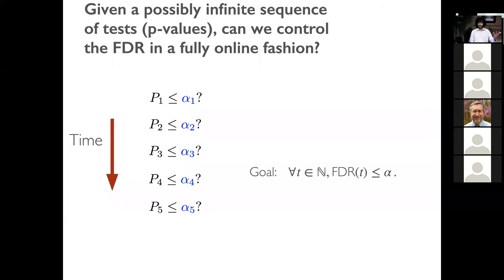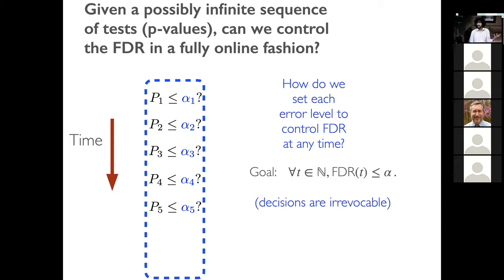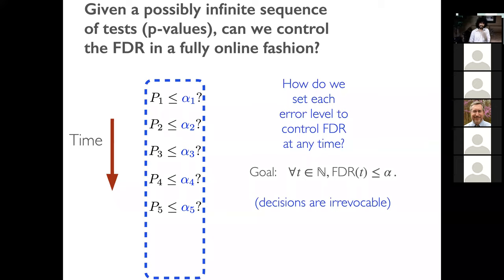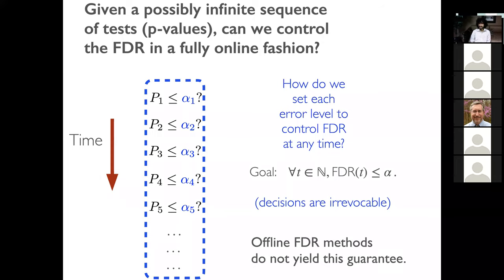Decisions are irrevocable. In January you find an interesting change or a drug that's much better than control, and in December you don't get to go back. You have to commit to a change when the first test is done. This goes on forever — and you would like FDR control at any time. Offline FDR methods don't guarantee this; running Benjamini-Hochberg on the first T hypotheses is not going to yield any such guarantee. We need a different class of methods.